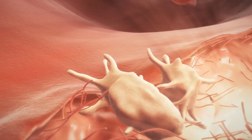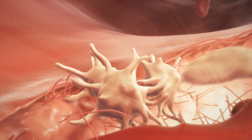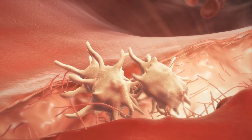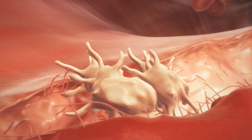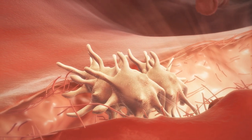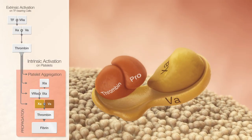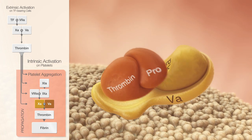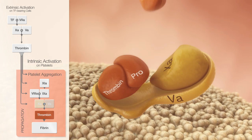Thrombin enhances the activation and aggregation of platelets. On their surfaces, the coagulation factors, also activated by thrombin, accumulate. In tandem with factor 5a, factor 10a induces the so-called thrombin burst.